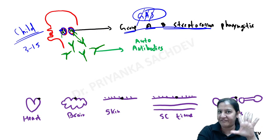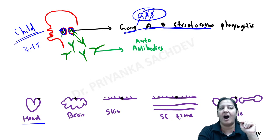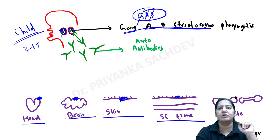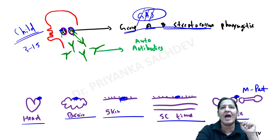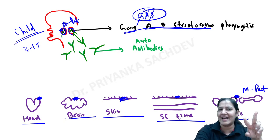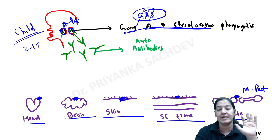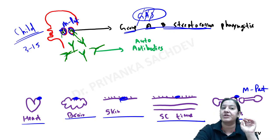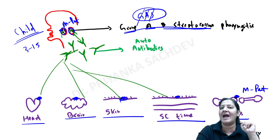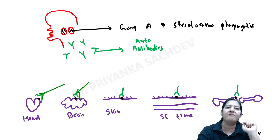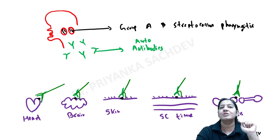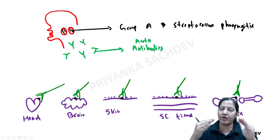The problem is not the bacteria but the antibodies. The bacteria has a surface antigen called M protein, and a similar M protein is present on five human organs: the heart, the brain, the skin, the subcutaneous tissue, and the joints. The antibodies get confused and form antigen-antibody complexes with these five organs, acting as autoantibodies.